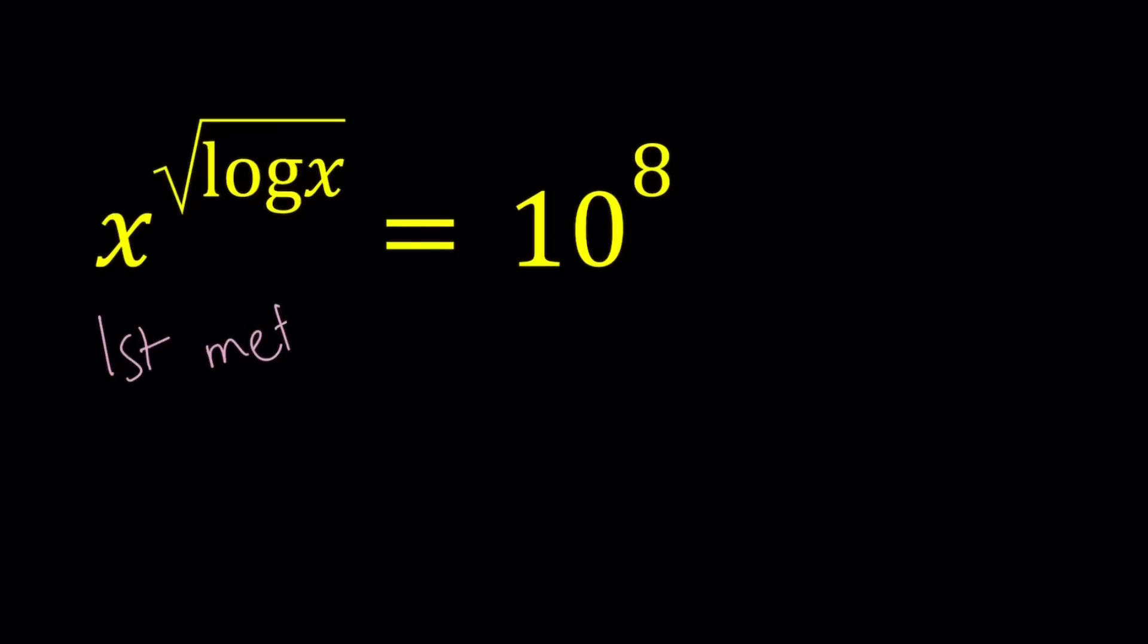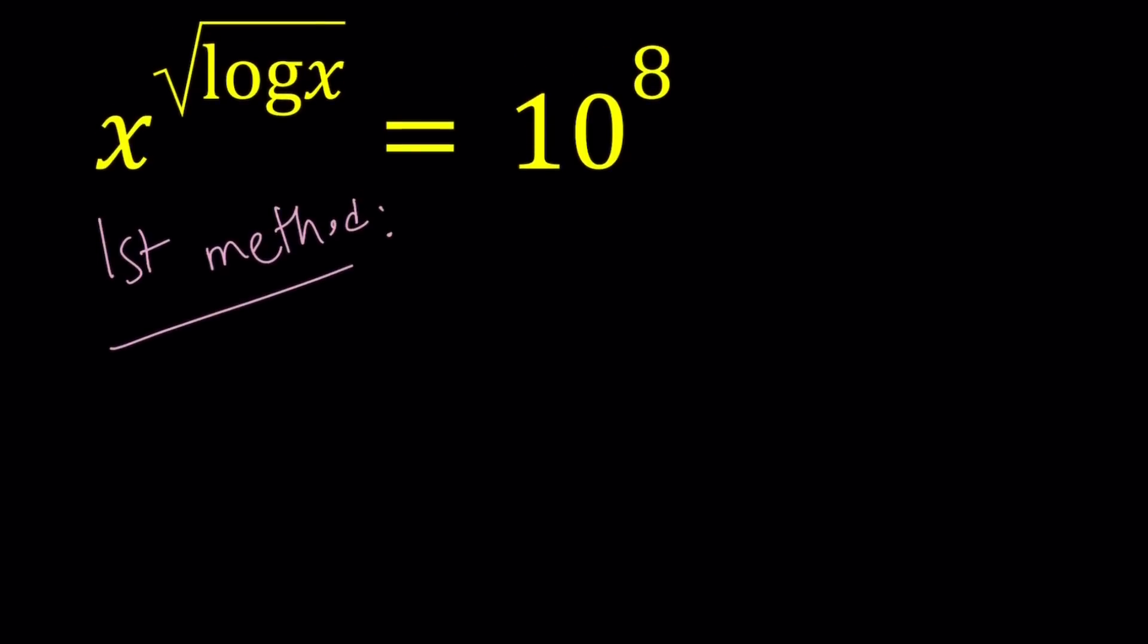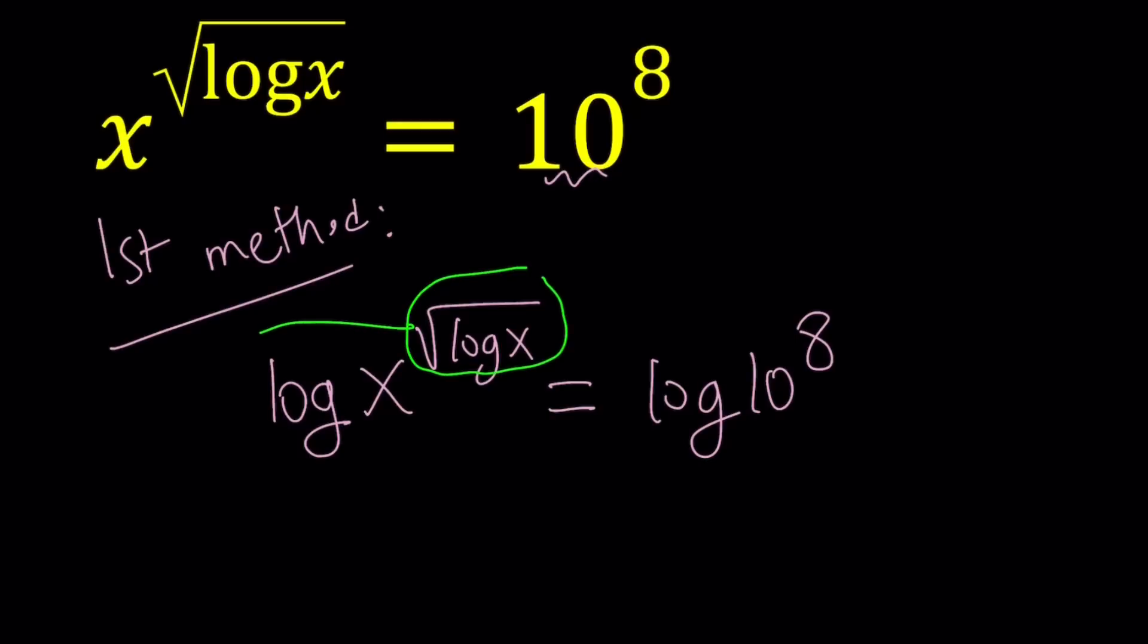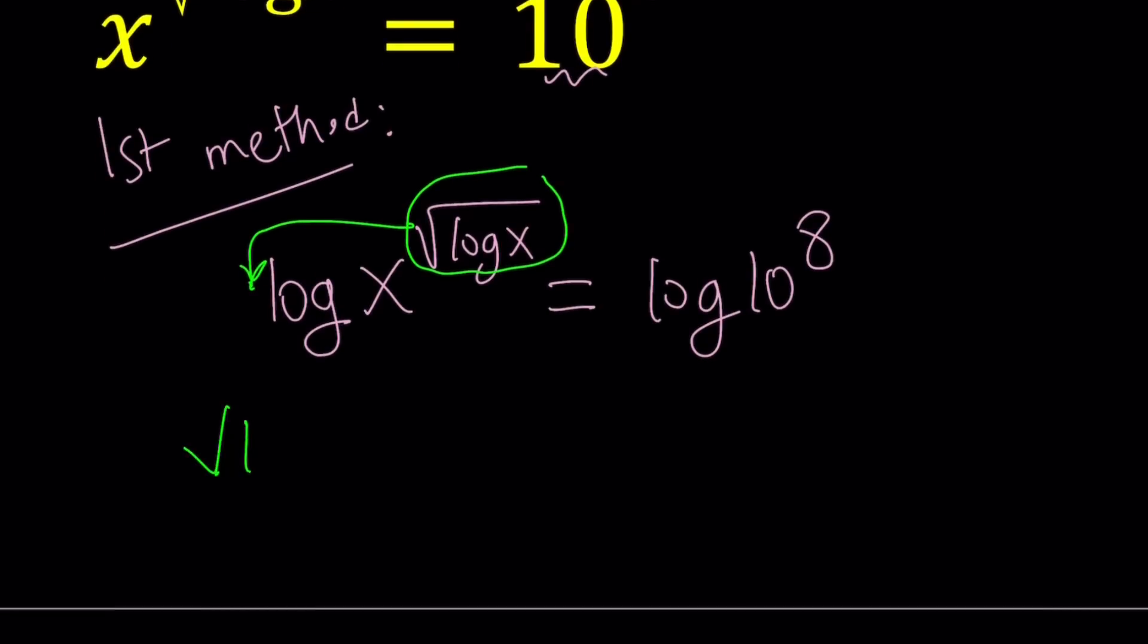My first method involves something commonly used. I'm going to log both sides. And log is basically base 10 here. When it's not written, it's usually base 10. And obviously the motivation is we have a base 10 here, so it makes sense. Now we can go ahead and move this to the front. This is a power or exponent. We can go ahead and move it here and write this as square root of log x multiply by log x. And then we can move the 8 as well. But log 10 is 1, so this becomes 8.